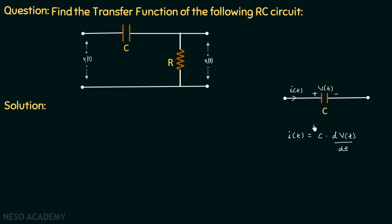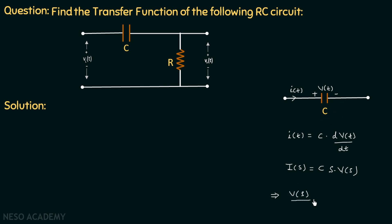Applying Laplace transform to this equation gives I(s) = C × sV(s), since C is a constant and the Laplace transform of the derivative of v(t) is sV(s), where V(s) is the Laplace transform of v(t). Taking the ratio V(s) over I(s) gives the impedance offered by the capacitor, which equals 1 over sC. This is how the Laplace transform of a capacitor is 1 over sC.